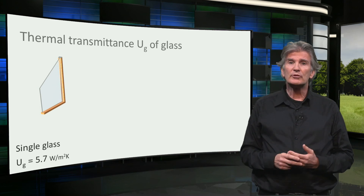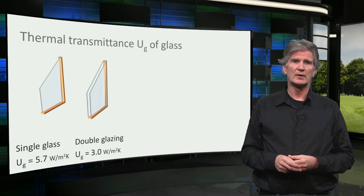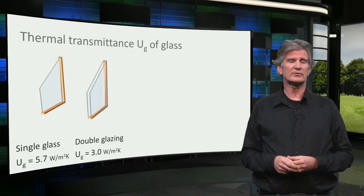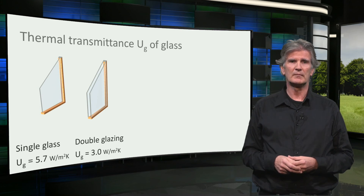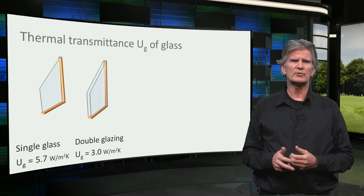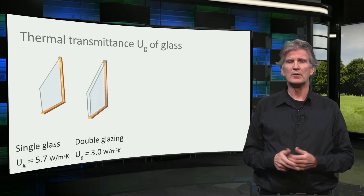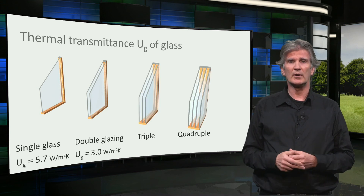To reduce the U-value of glass, a few technologies are applied. First, adding additional layers of glass, thus creating one or more air cavities. By adding one extra layer, double glazing is created with a U-value of 3, which almost halves the heat losses compared to single glass. Double glazing is common nowadays. Triple glazing is more and more applied, and even quadruple glazing is on its way.